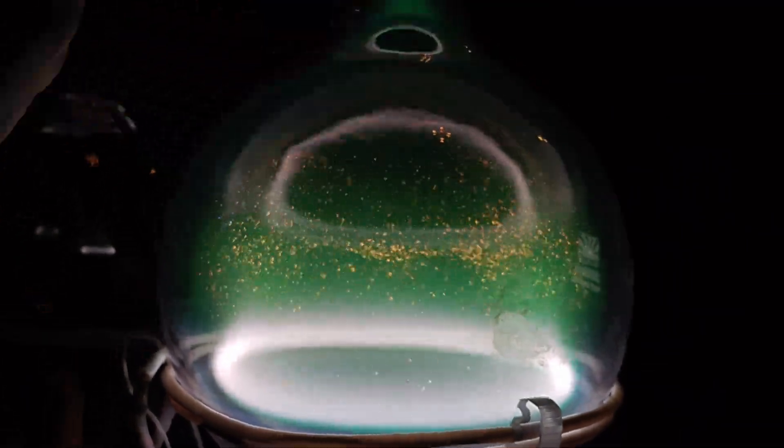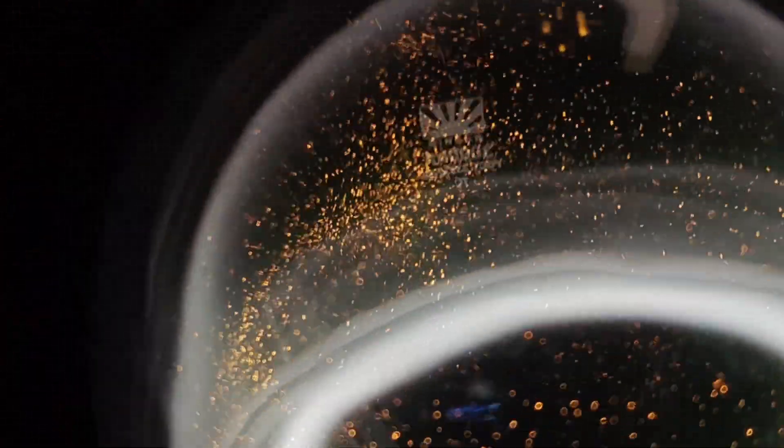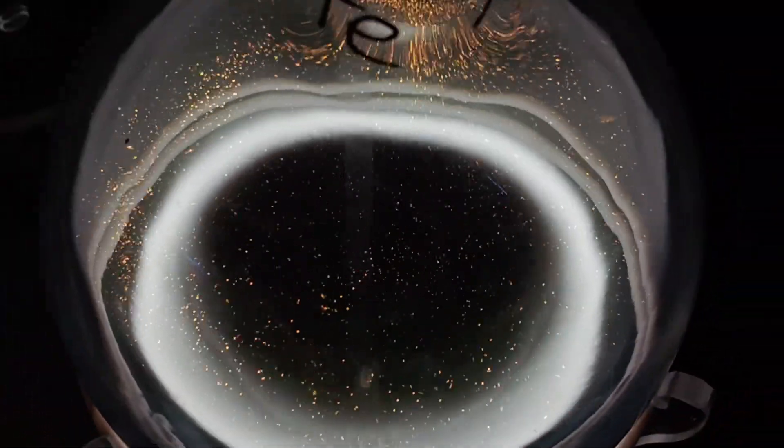In slow motion, tiny pinprick flashes appear throughout the cloud. Those are brief moments of recombination and rapid recharging as electrons and ions meet and separate again.